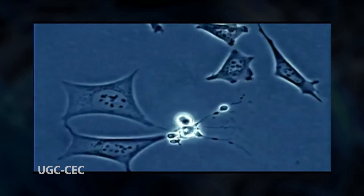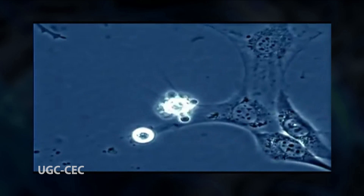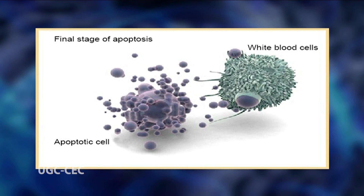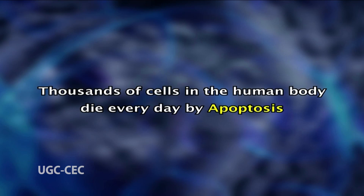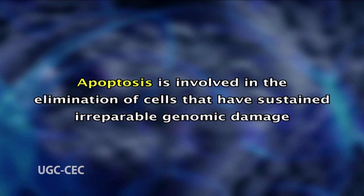Apoptosis is a normal, orderly process characterized by the overall shrinkage in volume of the cell and its nucleus, loss of adhesion to neighboring cells, formation of blebs at the cell surface, dissection of chromatin into small fragments, and rapid engulfment of the corpse by phagocytosis. It has been estimated that thousands of cells in the human body die every day by apoptosis.